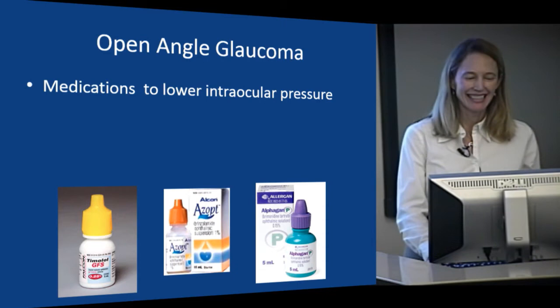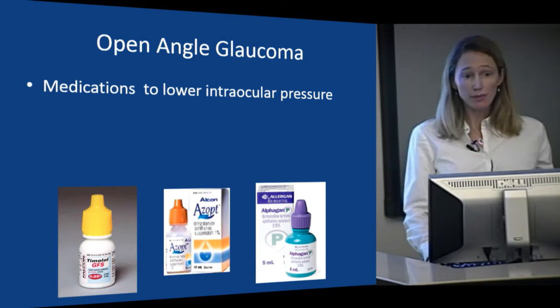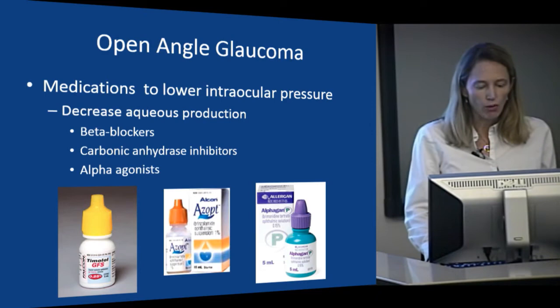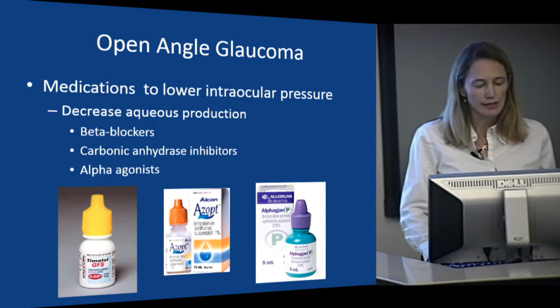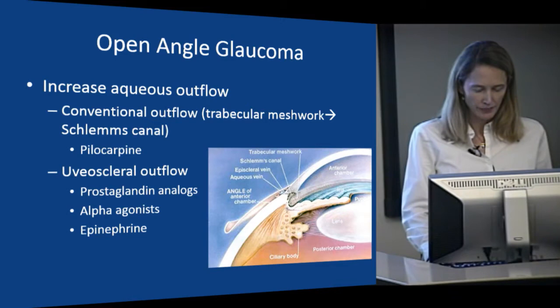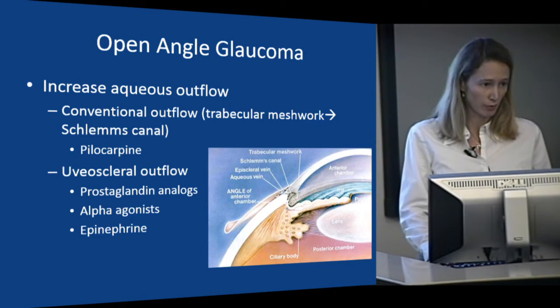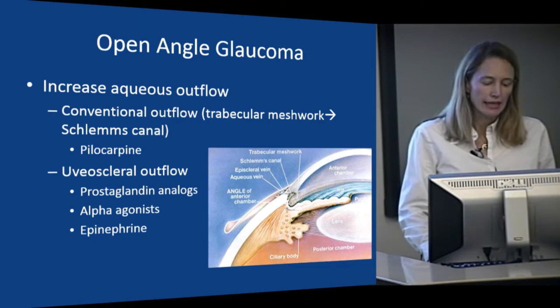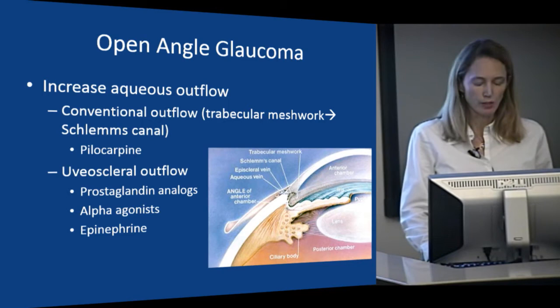Most of the time we start with eye drops, and for many patients this is all they need for their lifetime. The eye drops we use to treat glaucoma do one of two things: they either decrease aqueous production or they increase aqueous outflow. Drugs that decrease aqueous production include beta blockers, carbonic anhydrase inhibitors, and alpha agonists. Drugs that increase outflow include pilocarpine — the only drug we had for many years, with a lot of unpleasant side effects. The prostaglandin analogs are the newest type of medications and increase outflow through the uveoscleral pathway.